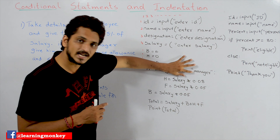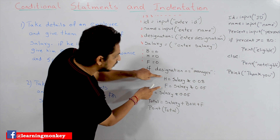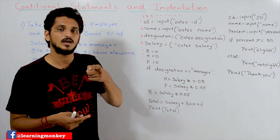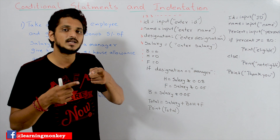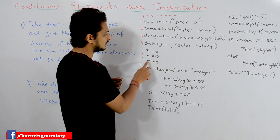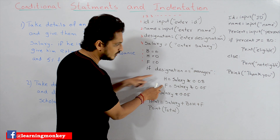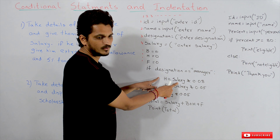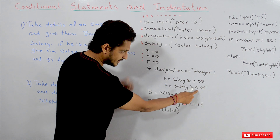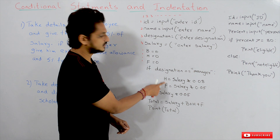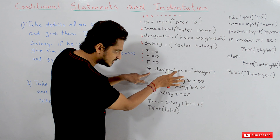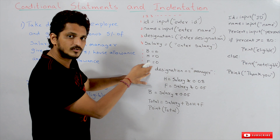If this condition is true, then this block of code has to be executed. If he is a manager, we have to calculate the food allowances and house allowances. If he is not a manager, no need to calculate these — house allowances and food allowances remain 0. So if he is a manager: H = 0.08 * salary (8% of salary assigned to H), and F = 0.05 * salary (5% of salary assigned to F). After executing this block, if the condition is satisfied, this block of code belongs to the if condition.